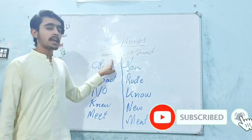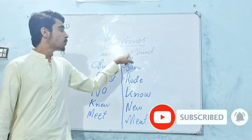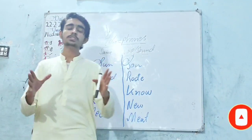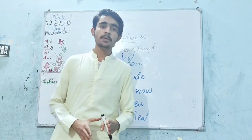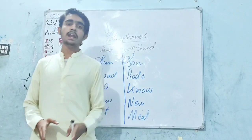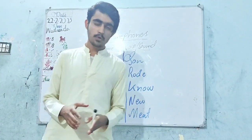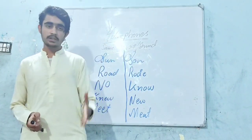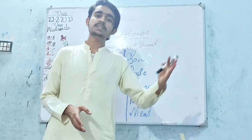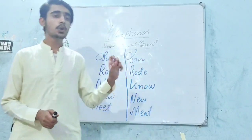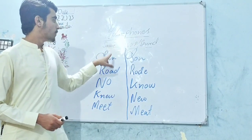Homo means same, and phone means voice or sound. So homophones are those types of words that sound the same but their spellings and their meanings are different. Those types of words — they sound the same but they have different meanings and different spellings — they are called homophones.